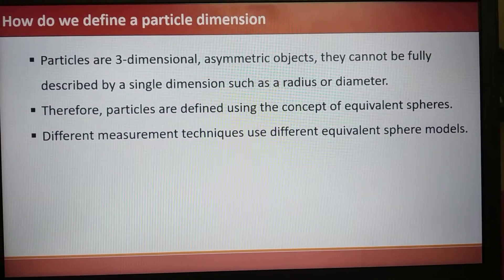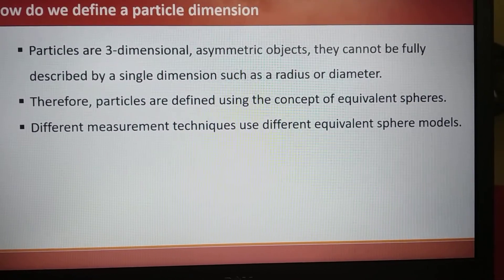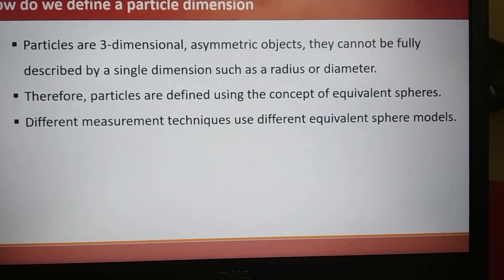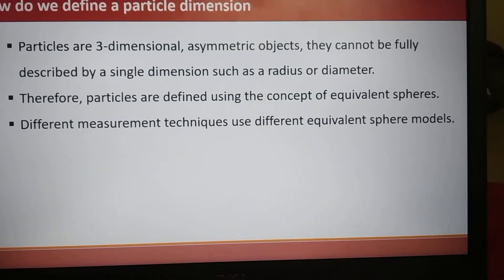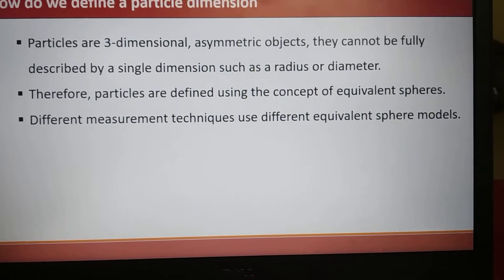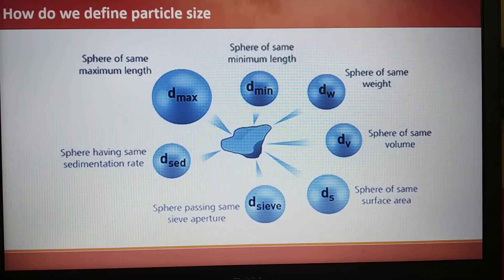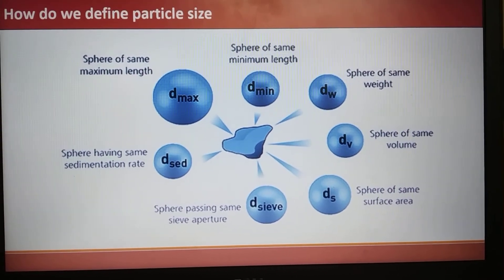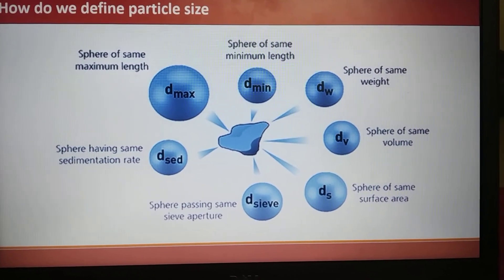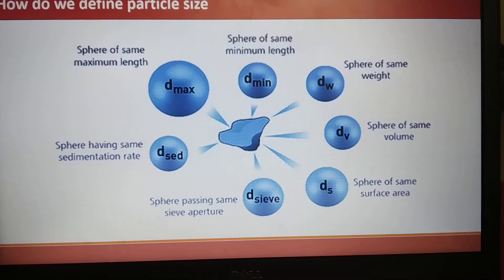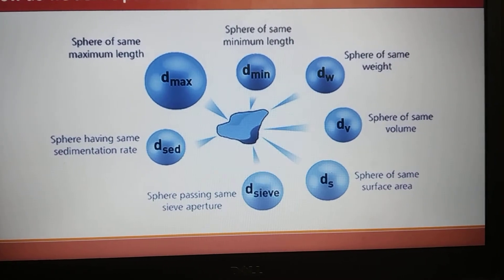So how do we define particle dimensions? Particles are three-dimensional asymmetric objects. They cannot be fully described by a single dimension such as radius or diameter unless they are spherical in nature. Therefore, particles are defined using the concept of equivalent spheres. Different measurement techniques use different equivalent sphere models. For example, the same particle can be represented as a sphere of same maximum length or minimum length, sphere of same weight or volume, sphere of same surface area, sphere of same sedimentation rate, or sphere passing through same sieve aperture.